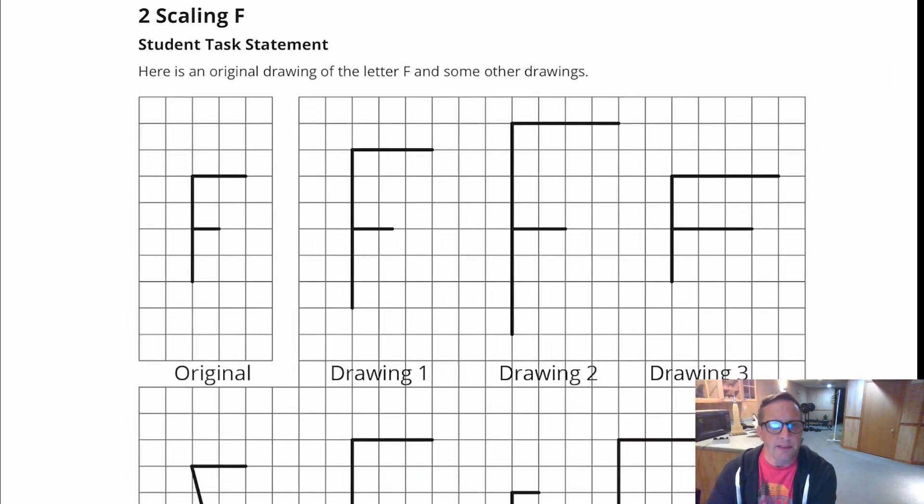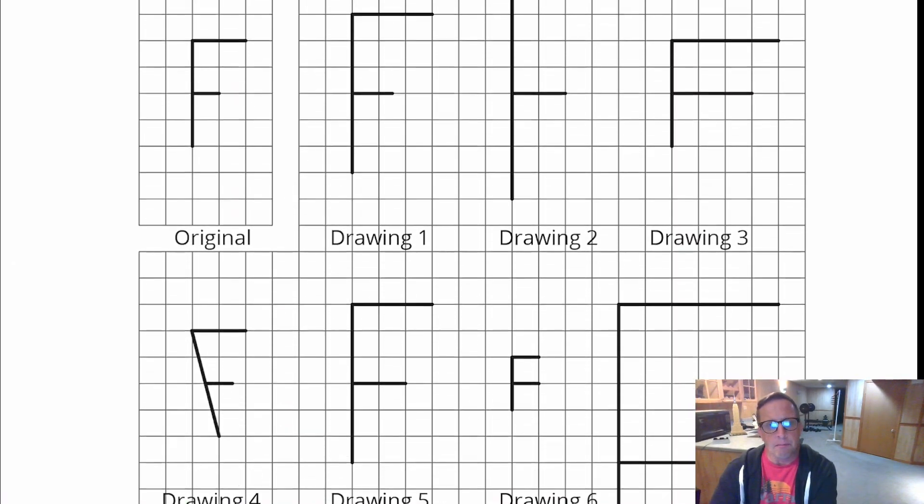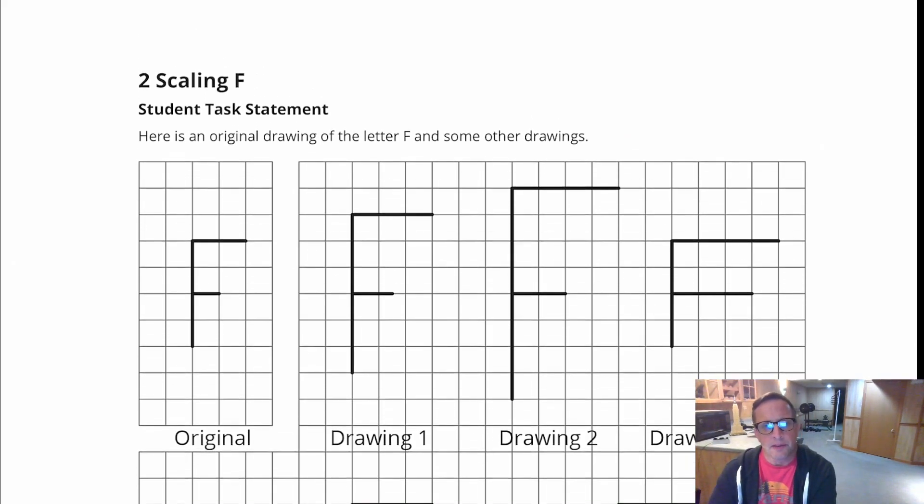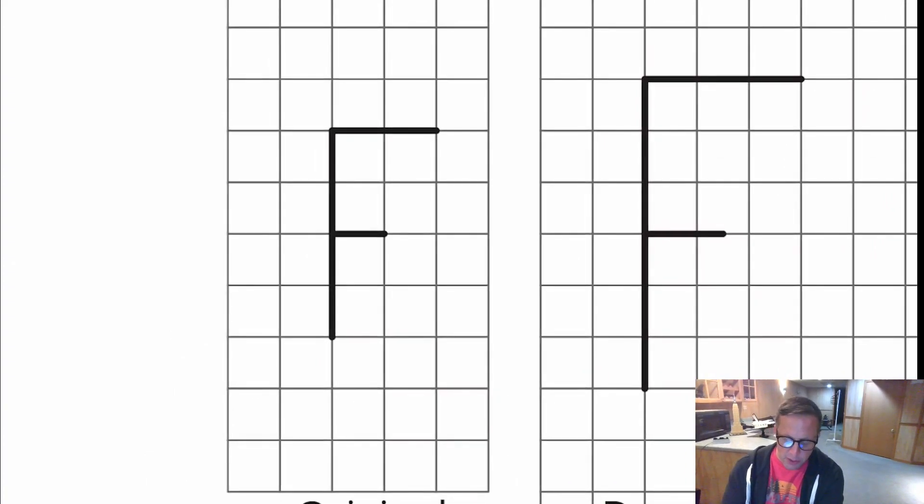Now for part two activity, you've got scaling F, student task statement. You've got an original drawing for F, and then drawing one through drawing seven are scales of it, but we've got to figure out which one is actually a scale. And I think in order to do that, it helps to look at the original. There's some things that you might want to make note of, for instance like the measurements, because this letter F right here is drawn on a grid, and it's intentionally drawn on that grid so that you can see the measurements, see how long something is or how tall it is.